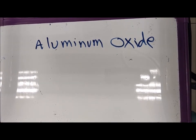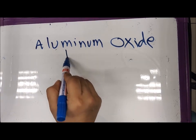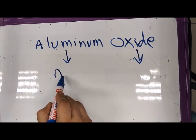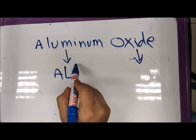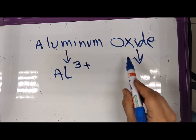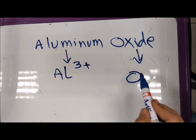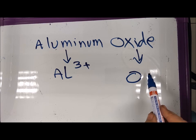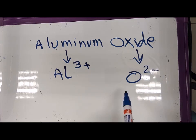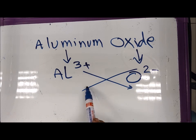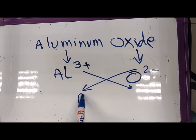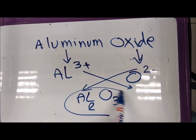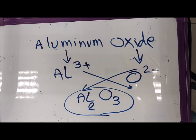Let's work out aluminum oxide. You can pause the video. The ions are aluminum — Al³⁺ (Group 3, so 3+) — and oxide, which is O²⁻. Swap the charges: aluminum gets subscript 2 and oxygen gets subscript 3. So the formula is Al₂O₃. This is the formula of the ionic compound aluminum oxide.